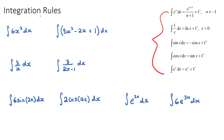Integration is the opposite to differentiation, so whatever rules we used for differentiation are the opposite rules when applying them to an integral question. If we are integrating, we'll start with the first one — integrating 6x squared. We have our integral sign at the front and we always have dx at the end, which means we are integrating this function in terms of x.